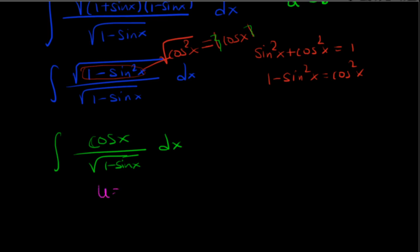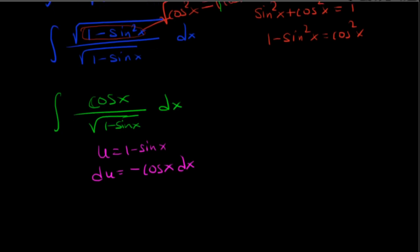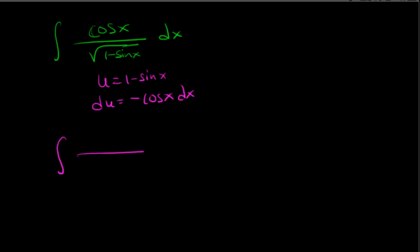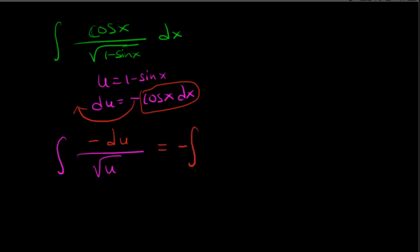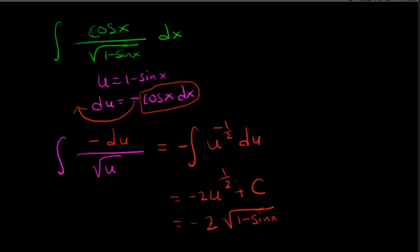We're going to make a substitution: let u equal 1 minus sine x, so du equals negative cosine x dx. The denominator is just square root of u. The numerator has cosine x dx, which matches, so we get negative du. This can be rewritten as putting the negative on the outside and u to the negative one-half power. Integrating gives negative u to the one-half divided by one-half, which is the same as multiplying by 2. Substituting back, u equals 1 minus sine x, so the answer is negative 2 times square root of 1 minus sine x plus C.